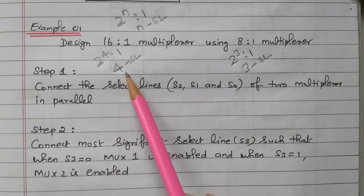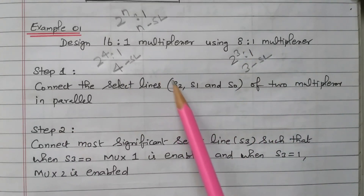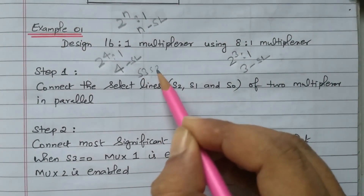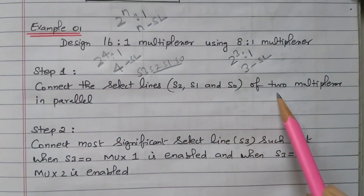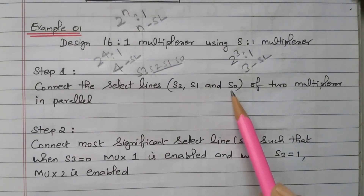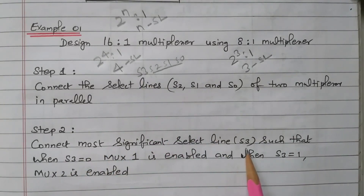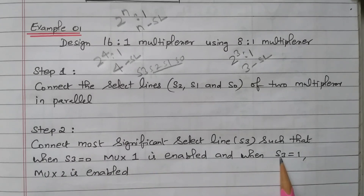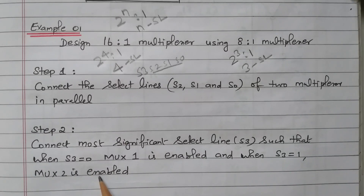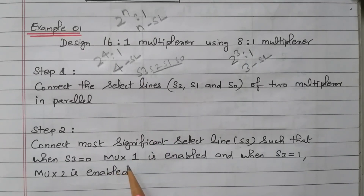Out of the 4 selection lines S3, S2, S1, S0 of the 16-to-1 multiplexer, the 3 lines starting from LSB — S2, S1, S0 — are connected in parallel to both 8-to-1 multiplexers. The MSB selection line S3 is used to enable MUX1 and MUX2: when S3 equals 0, MUX1 is enabled; when S3 equals 1, MUX2 is enabled.